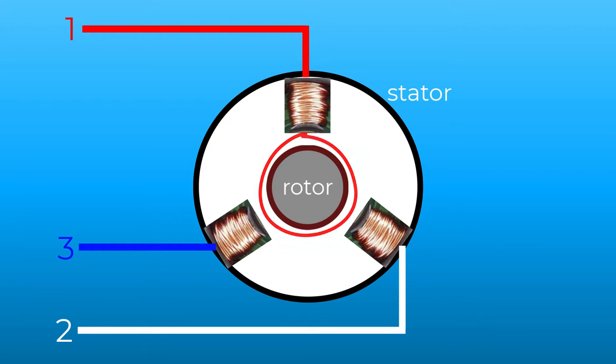A three-phase motor has a rotor and a stator. The stator has coils that are connected to the three-phase supply.